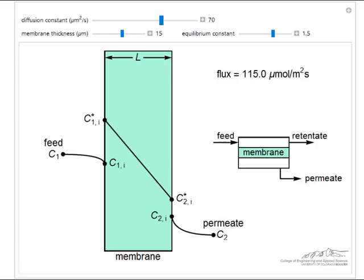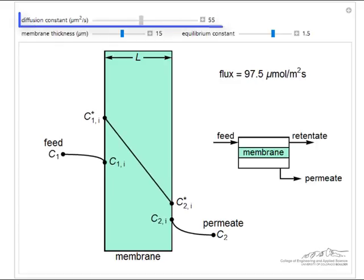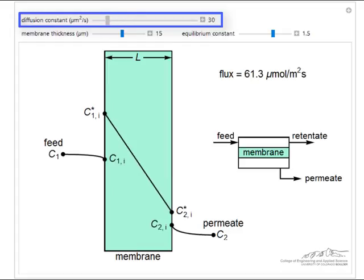Here is the interactive simulation. You can see if we decrease the diffusion constant, then the flux will go down significantly, and we have a bigger concentration gradient across the membrane.